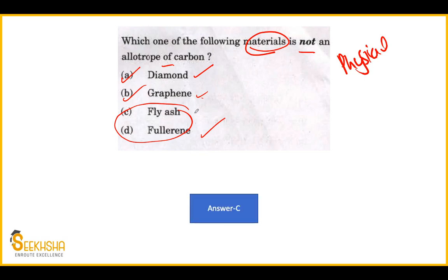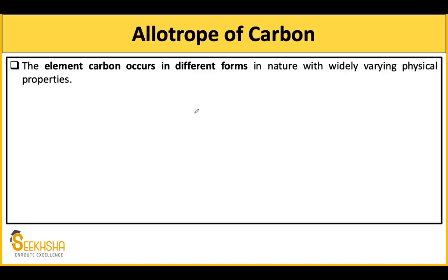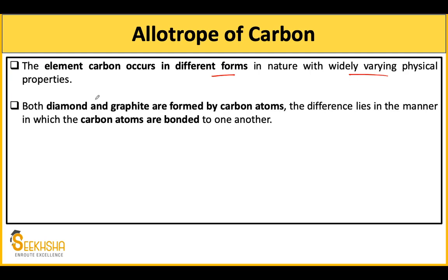Let's talk about allotropes of carbon. The element carbon occurs in different forms in nature with widely varying physical properties. For example, diamond and graphite are two different forms. If you look at diamond, it is one of the hardest substances. And graphite is very soft — so their physical properties differ greatly. Both diamond and graphite are formed by carbon atoms; the difference lies in the manner in which the carbon atoms are bonded.